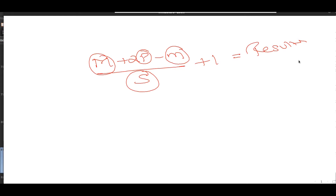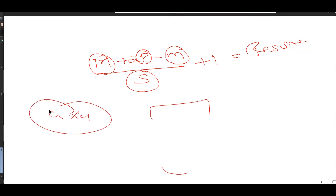When you apply padding, it is always done on all four sides — you cannot control which side gets padding. This is necessary to maintain a square matrix.